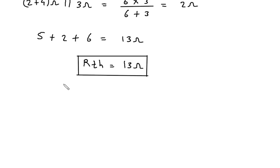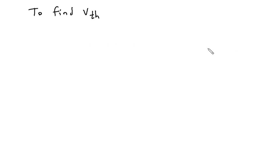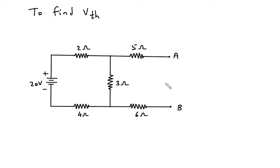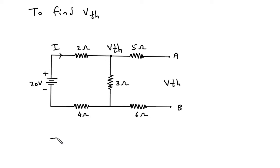Next we have to find Vth. Here this will be our Vth. Now here we can see this terminal is open circuited, so this will be our Vth. Now to find Vth, let's say the total current flowing through this mesh is capital I. Now using Ohm's law, I is equal to V by R.